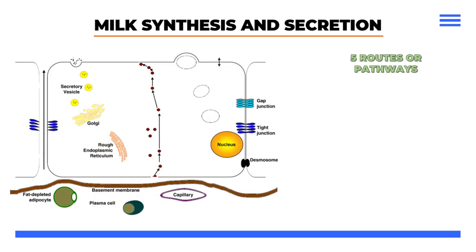There are 5 existing routes in the secretion of milk components. Pathway 1, or the Golgi route: major milk proteins such as casein, oligosaccharides, and nutrients such as lactose and citrate are packaged into secretory vessels and transported into milk by exocytosis.